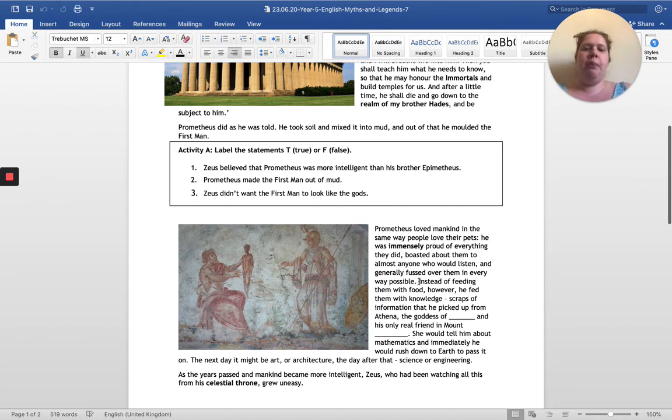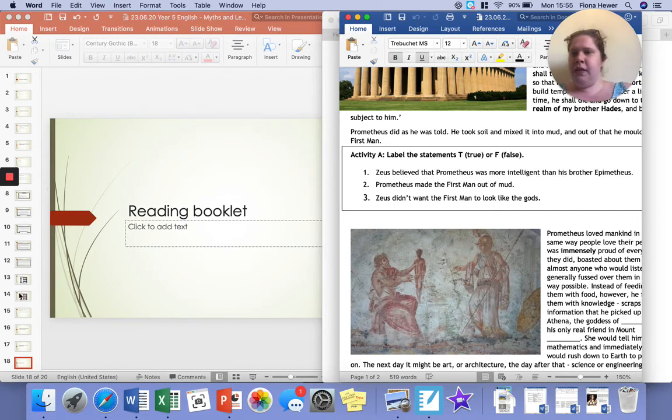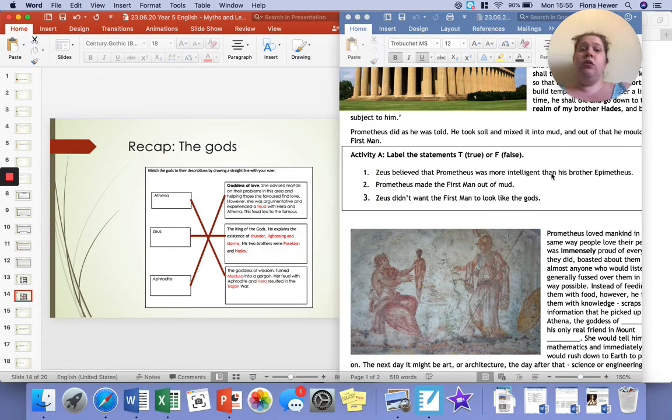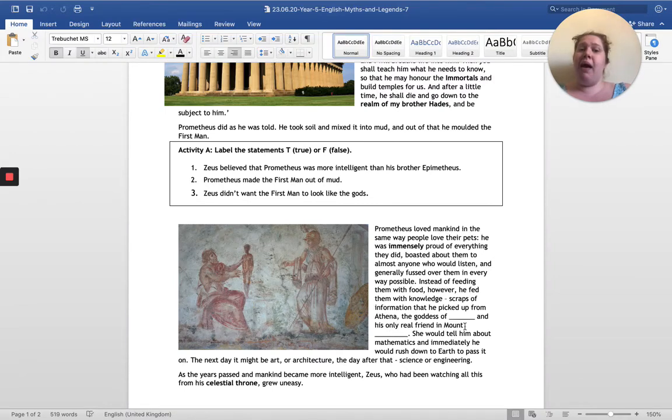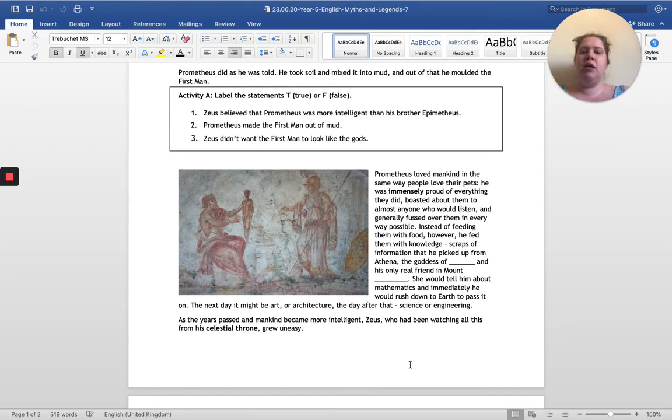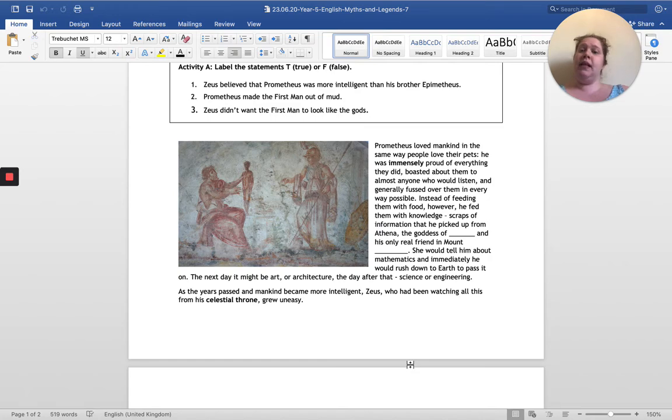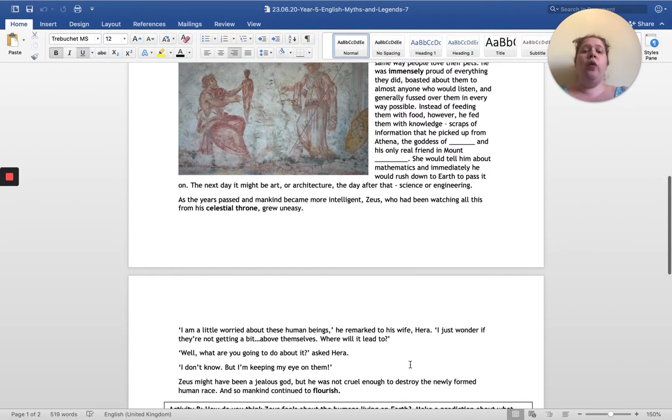Prometheus loved mankind in the same way people love their pets. He was immensely proud of everything they did and boasted about them to almost anyone who would listen. Instead of feeding them with food, however, he fed them with knowledge, scraps of information that he had picked up from Athena, the goddess of wisdom. Do you remember we just covered it? Who was Athena? The goddess of wisdom.